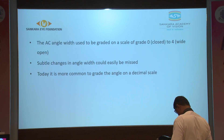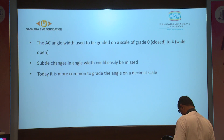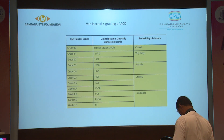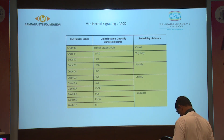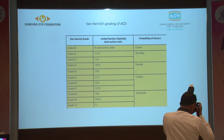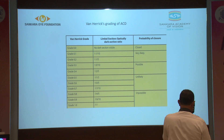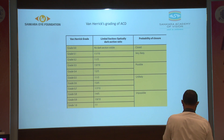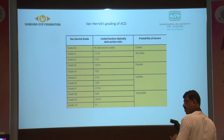When graded from 1 to 4, we can miss subtle changes. Hence a decimal scale was introduced, ranging from 0 to grade 1. Grade 0 is when no dark section is visible at all — that is, there is iridocorneal contact. Grade 1 is a 1-to-1 ratio, meaning the optically dark section is equal to the limbal section.